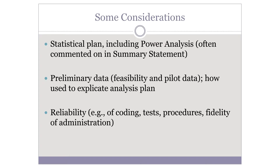The statistical plan, including power analysis, is often talked about in the summary statement. Preliminary data, even for an F31, are crucial — they might just be used to illustrate feasibility. In our speech group yesterday, we reviewed a grant with a cool synchrony analysis, and one feasibility figure from a single subject would have really clarified the analysis plan. Even for a very first grant, feasibility data are absolutely critical.